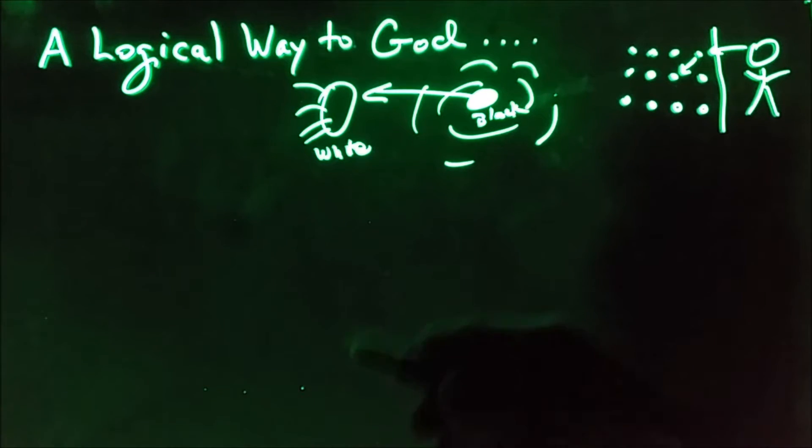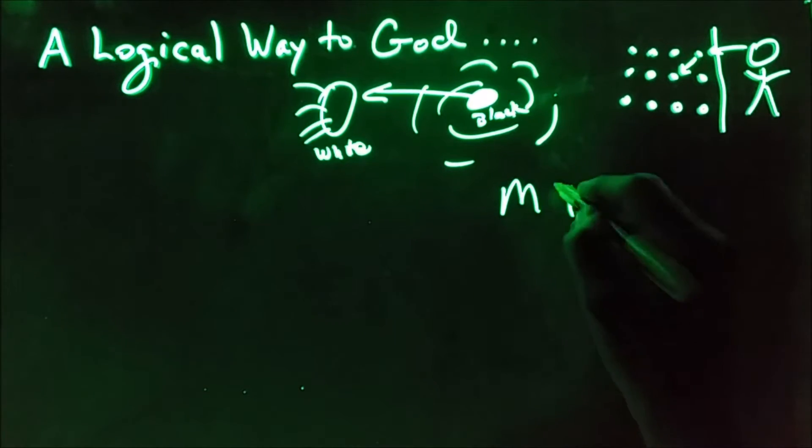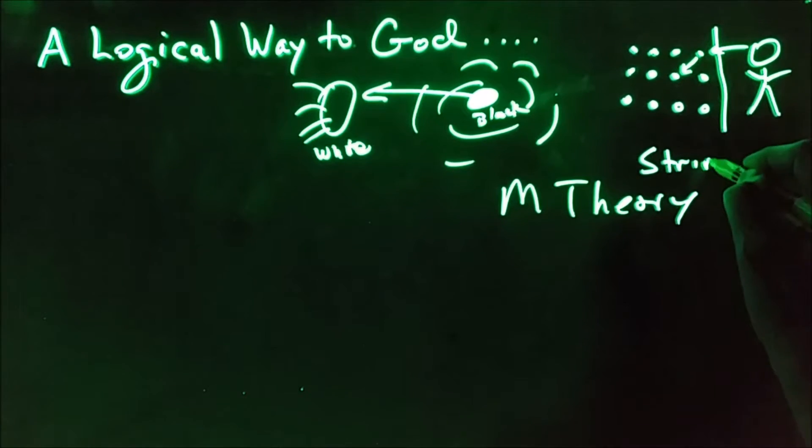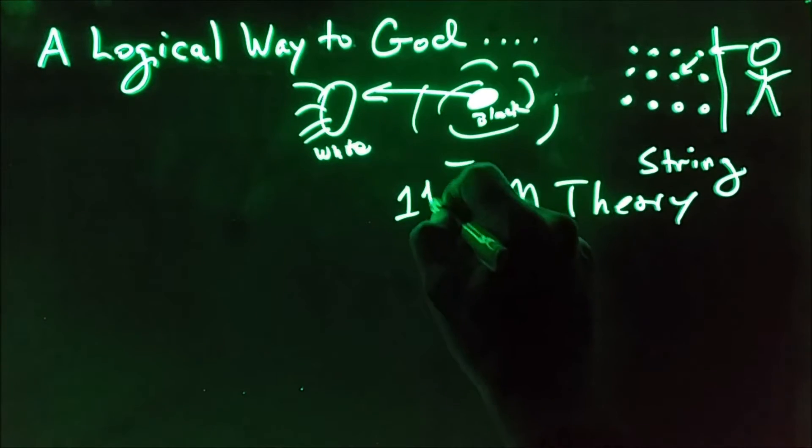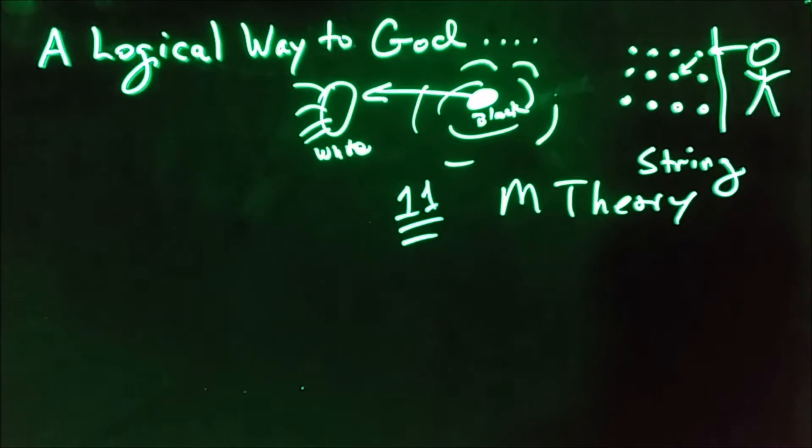Now the math seems to back it and they call it M theory. Now it used to be called string. And the problem is to make the math work, you have to have multiple universes. I think they're up to 11 now. To make their math work with string theory or M theory, they've got to get to 11 universes.